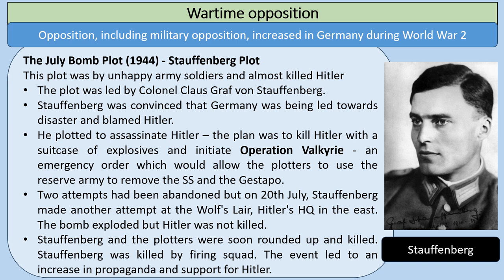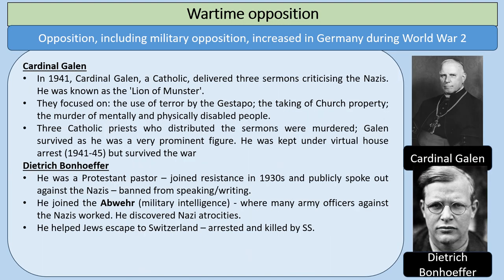The Stauffenberg plot was not the only example of opposition. There was also opposition from people in the church. Cardinal Galen, in 1941, delivered three sermons criticizing the Nazis and was known by his nickname the Lion of Munster. His sermons focused on the use of terror by the Gestapo, the taking of church property, and the murder of mentally and physically disabled people. His campaign against this actually stopped Nazi policy and brought a halt to their euthanasia programme. Three Catholic priests who distributed his sermons were murdered, but Galen survived as a prominent and popular figure, kept under virtual house arrest between 1941 and 1945.